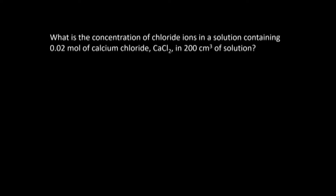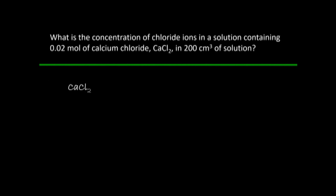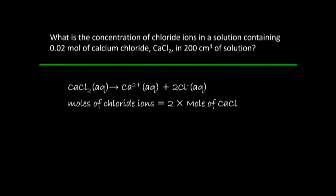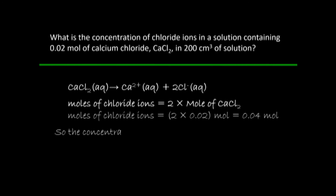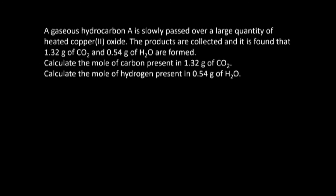Another problem: find the concentration of chloride ions in a calcium chloride solution. First find the moles of calcium chloride, then the moles of chloride ion will be double that (stoichiometric ratio 1:2), giving 0.04 mol chloride. Concentration = 0.04 ÷ (200/1000) = 0.2 mol dm⁻³.